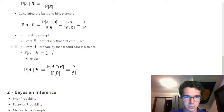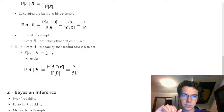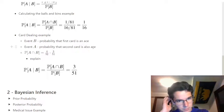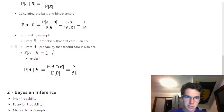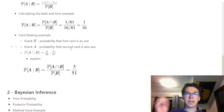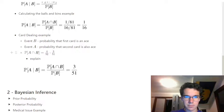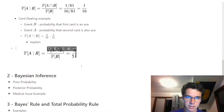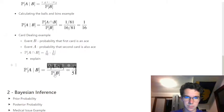Let's look at a card-dealing example. Event B is the probability the first card is an ace, and event A is the probability the second card is also an ace. There are four aces in a deck of 52 cards. If event B happens, one ace has been removed, so the number of aces goes down by one and the total cards goes down by one. Given event B, event A has probability 3/51.